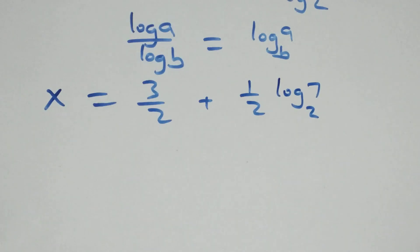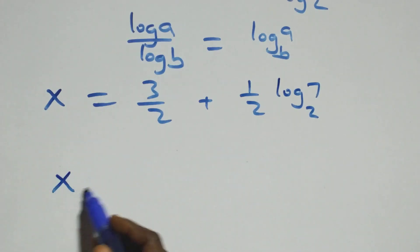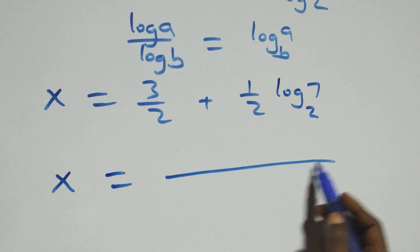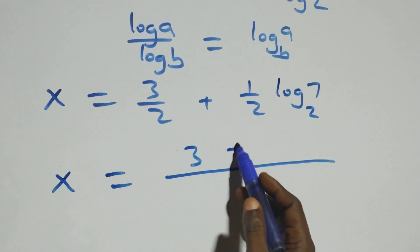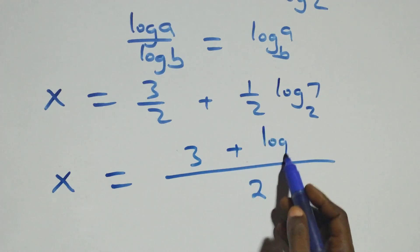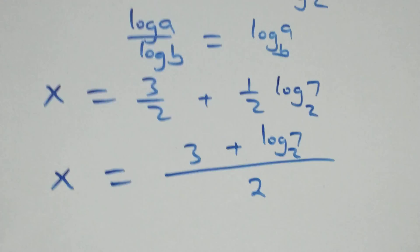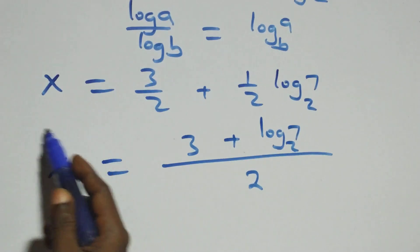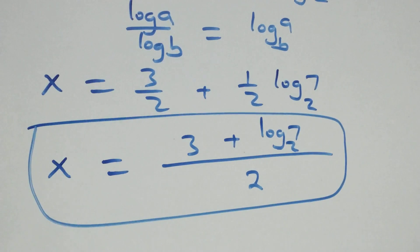Then next step, we bring this together as one fraction over 2. So x equals 3 plus log 7 base 2, all over 2. That is the value of x.